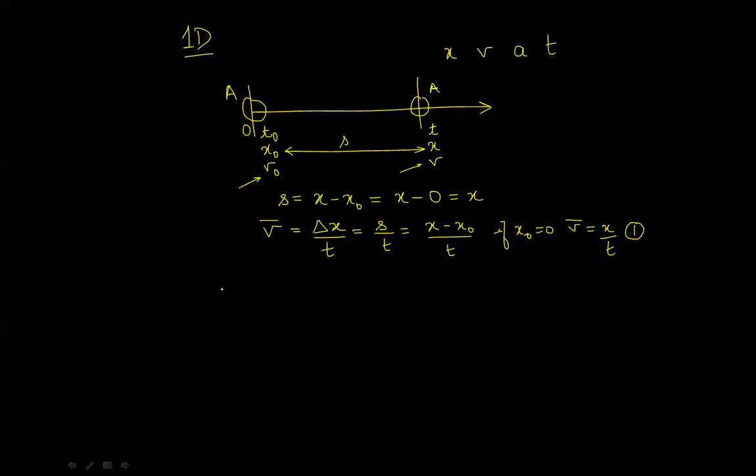We shall go on to take this equation and manipulate it. Because, here, I can write this equation as, basically, X is equal to V bar T. So, the position is the time multiplied by the average velocity. But, what is the average velocity? What is V bar?